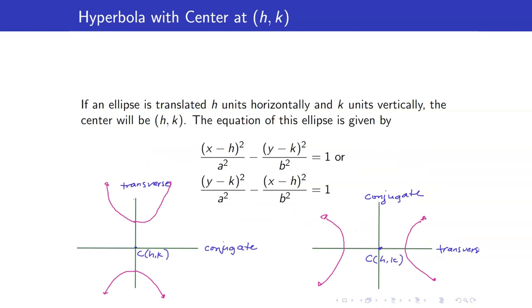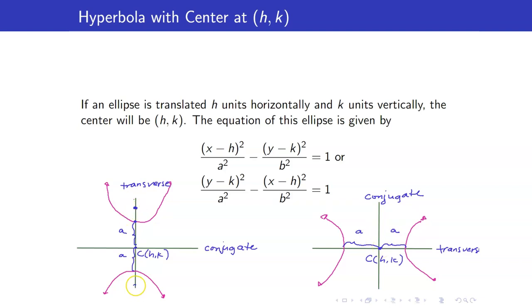Take note that if the center is at (H, K), the distances between the vertices and the foci remain the same. For a vertical hyperbola, the vertex is still A units away from the center, and for a horizontal hyperbola, the foci are still C units away from the center.